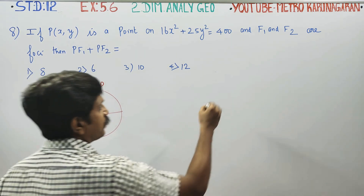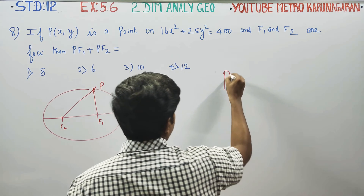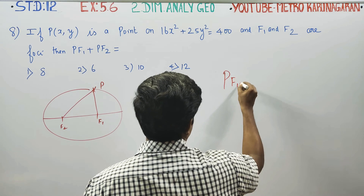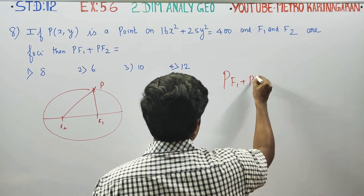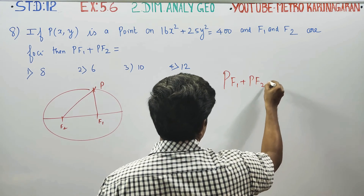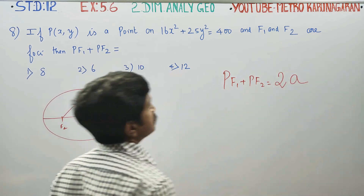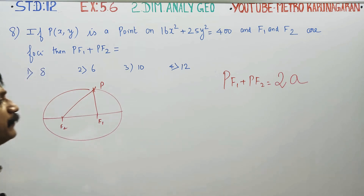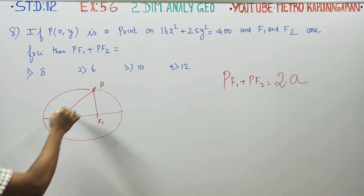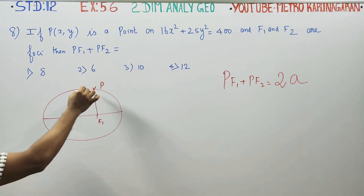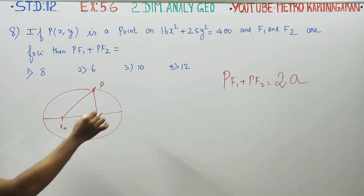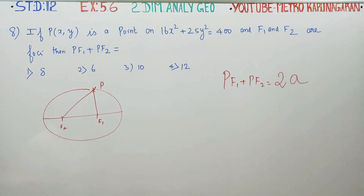The formula for PF1 + PF2 is equal to the length of the major axis. This is the formula. There is a proof for this in the book: PF1 + PF2 = 2a. Now, we will find the ellipse equation.